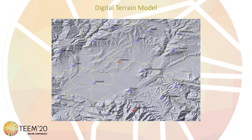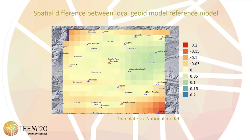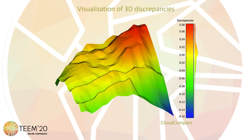Here is shown the digital terrain model of the study area with the geodetic vertices, and the overlap of the local thin-plate undulation. This is an example of one of the standard results. It is possible to compute the spatial difference between the student's adjustment and the reference national geoid model to draw conclusions, and additionally the student can use free geomatic visualization software to visualize the discrepancies as a 3D surface, as shown on the screen.